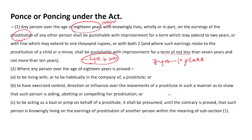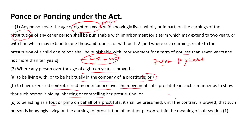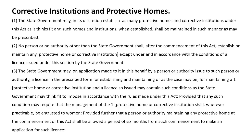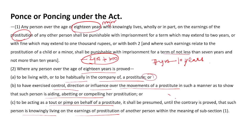When any person over the age of eighteen years is proved to be living with or habitually in the company of a prostitute, or exercises control, direction, or influence over the movements of a prostitute, or is helping or acting on behalf of the prostitute, it shall be presumed until the contrary is proved that such person is knowingly living on the earnings of prostitution, and they shall be liable to the fine.